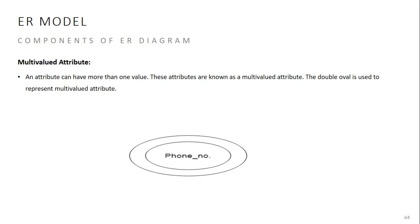Multi-valued attributes have multiple values. For example, an email address attribute can have multiple values — a person can have more than one email address. Multi-valued attributes are represented by a double ellipse in the ER diagram.